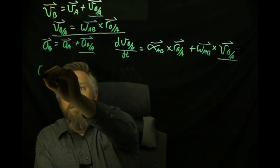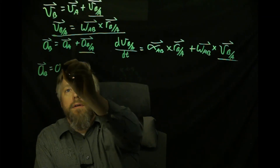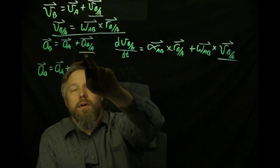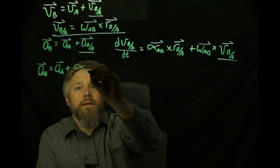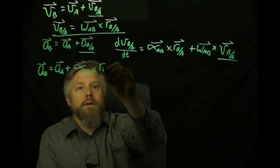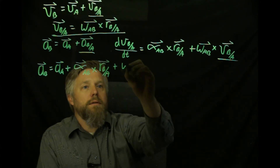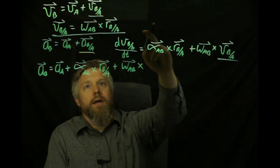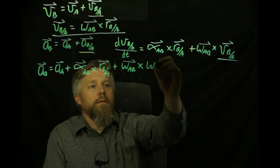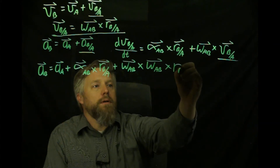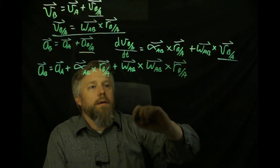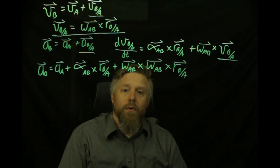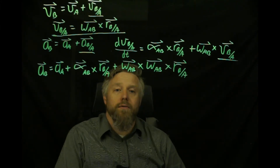We end up with the acceleration of b equals the acceleration of a, plus alpha_ab crossed with the position of b with respect to a, plus omega_ab crossed with — substituting our velocity of b with respect to a equal to omega cross r — omega_ab crossed with the position of b with respect to a. That's our relative motion acceleration equation, and we've seen this exact same equation when we derived it with our particle assumption.